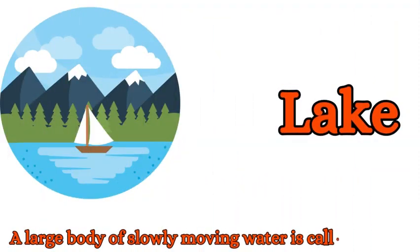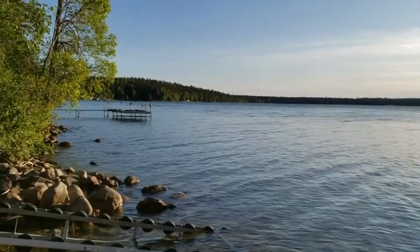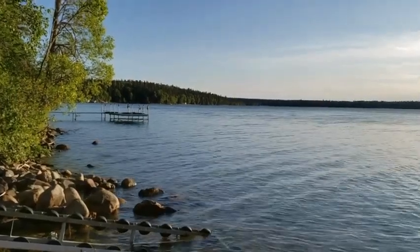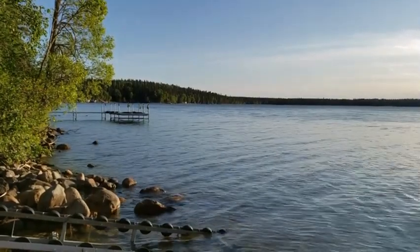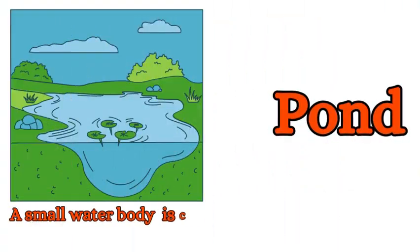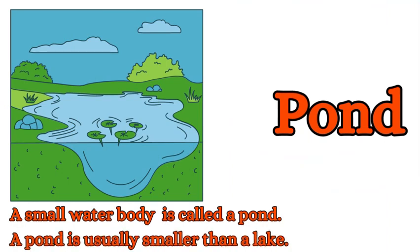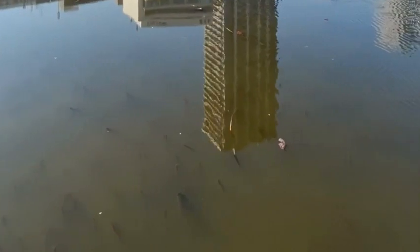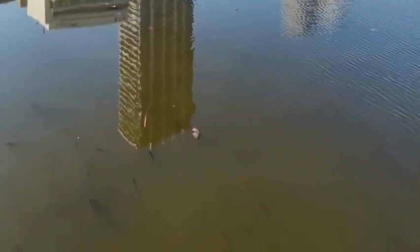Lake: a large body of slowly moving water is called a lake. Pond: a small water body is called a pond. A pond is usually smaller than a lake.